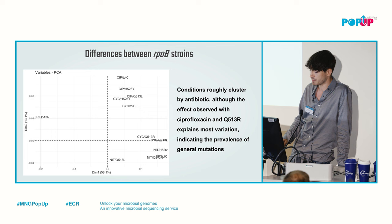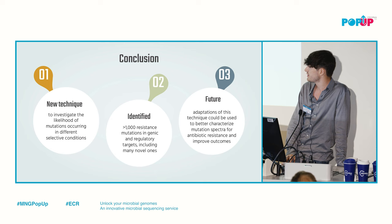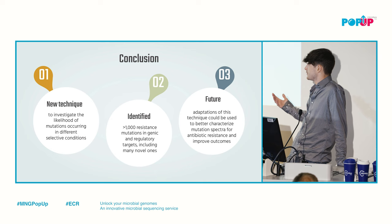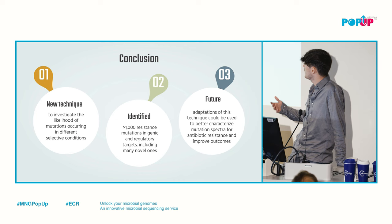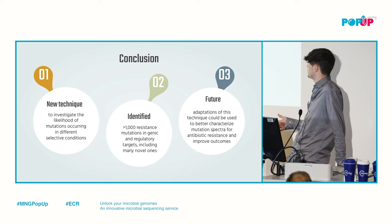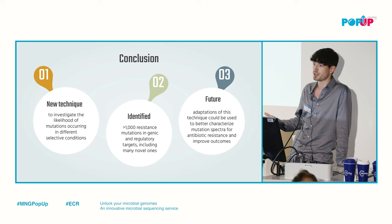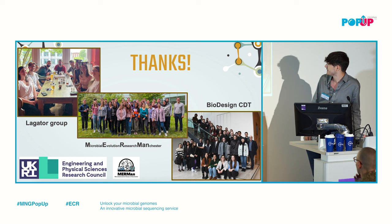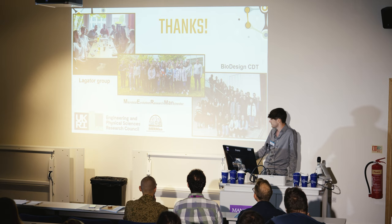In conclusion, we've developed a new technique to investigate the likelihood of mutations occurring in different selective conditions. We've used it to identify thousands of resistance mutations — both known and novel — in both genetic and regulatory regions. In the future, adaptations of this technique could be used to better characterize mutation spectra for many antibiotics and strains, with the hope of improving outcomes for antibiotic resistance infections. Thank you to the Legator Group, Merman, my CDT, and everybody.